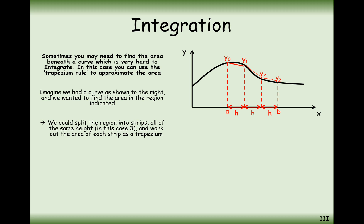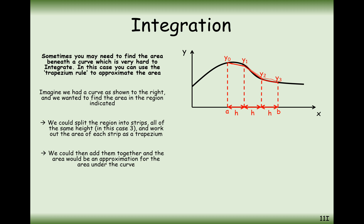We're going to do this from scratch initially, but eventually we're going to have a formula for it. So we connect the y coordinates together. Why do we call these y0, y1, y2 and y3? Well, this down here is the x0 coordinate, the x1 coordinate, the x2 coordinate, the x3 coordinate. And these are just the y coordinates that correspond to these x coordinates.